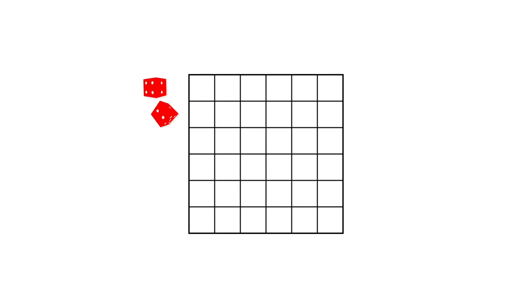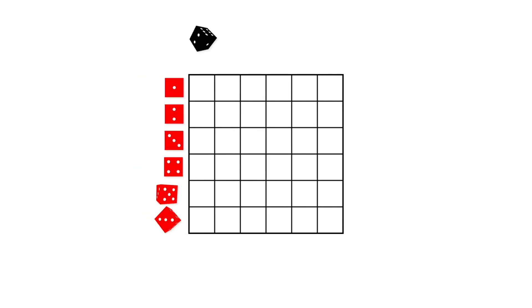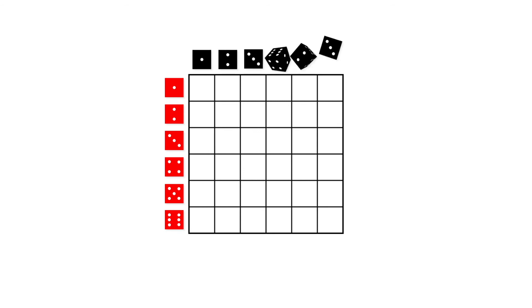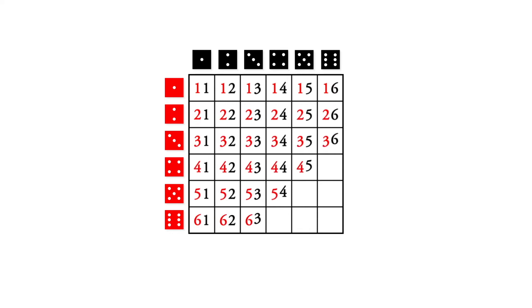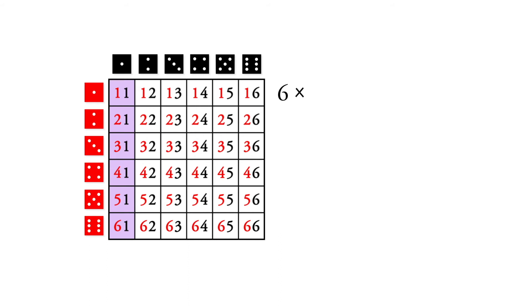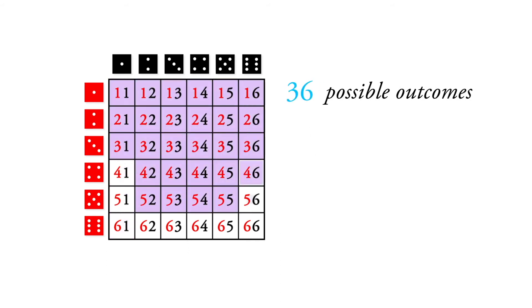There are lots of different ways to do this. One way is we can make a chart. We could have one through six on one axis and one through six on the other. So this is one-one, one-two, one-three, one-four, one-five, one-six, two-one, two-two, and so forth — we fill up the whole chart. You would see there are six possible outcomes for the first die, and you multiply that by the six possible outcomes for the second die, and you get 36 possible outcomes.